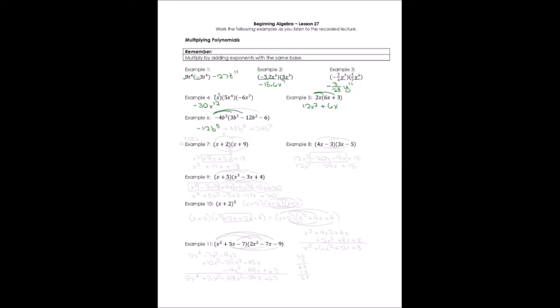The next term: negative 4b squared times negative 12b squared gives positive 48, and b squared times b squared gives b to the 4th. For the third term, negative 4b squared times negative 6 gives positive 24. We have no additional b's to multiply, so we just carry forward b squared.